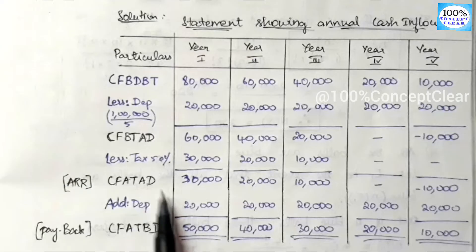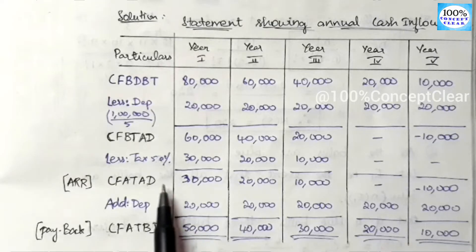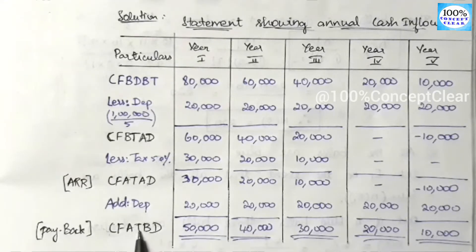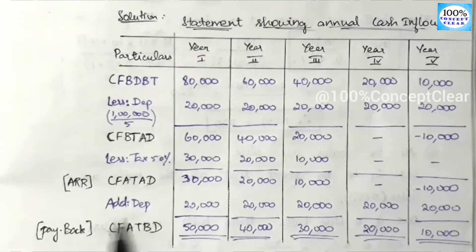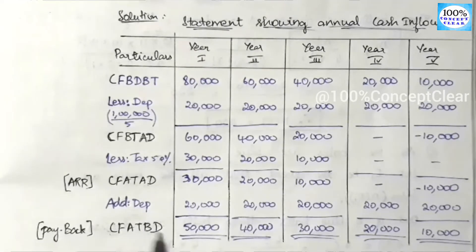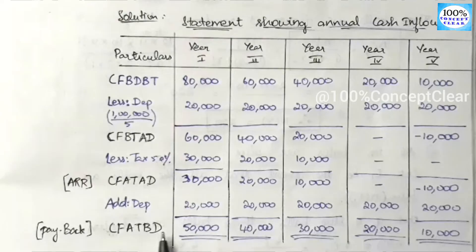In the question, the value is already after tax, so depreciation will be added back — it's before depreciation in the final cash flow. When the question is in cash flow after tax and before depreciation format, we can use these cash flow values directly.